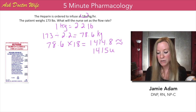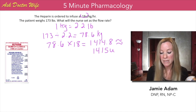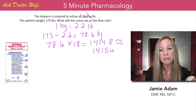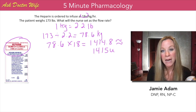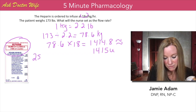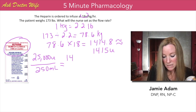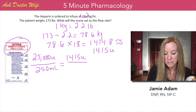We still don't know what to set the pump to — we don't know what the flow rate will be yet. We have to look at how the medication comes, how it's packaged, how it's labeled. Looking at the bag, it tells us there are 25,000 units of heparin in this 250 milliliter bag. Using ratio math, we have 25,000 units over 250 milliliters, and the patient needs 1,415 units over x milliliters.